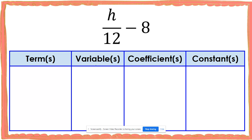My next expression is h over 12 minus 8. Another way of reading this would be h divided by 12 minus 8. The first thing I'm going to look for are my terms. Terms are separated by plus and minus signs, and I notice that I have a subtraction sign. That means h over 12 is one term of this expression, and 8 is another term. I noticed that I have the letter h, and h is going to represent a number, so h is going to be a variable for this expression.